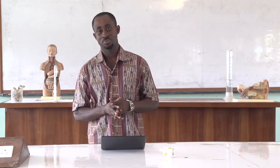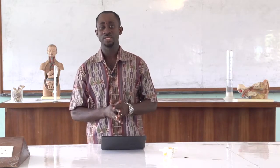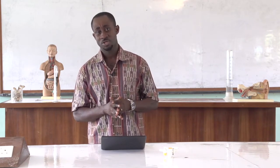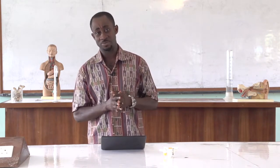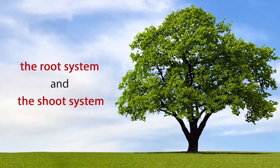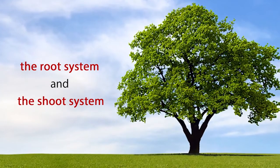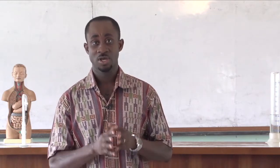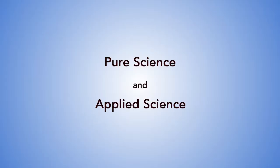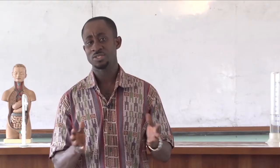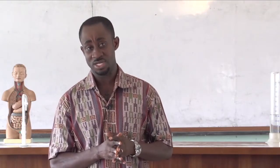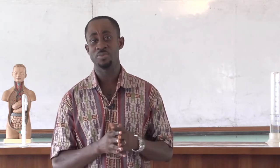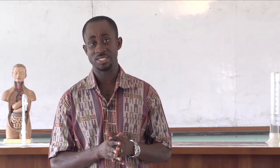Back to our example. Science could be likened to an entire tree. Trees have two systems, namely the root system and the shoot system. Similarly, science also has two main branches: pure science and applied science. Now let's look at some scenarios and see where we can situate them in the different areas of science.